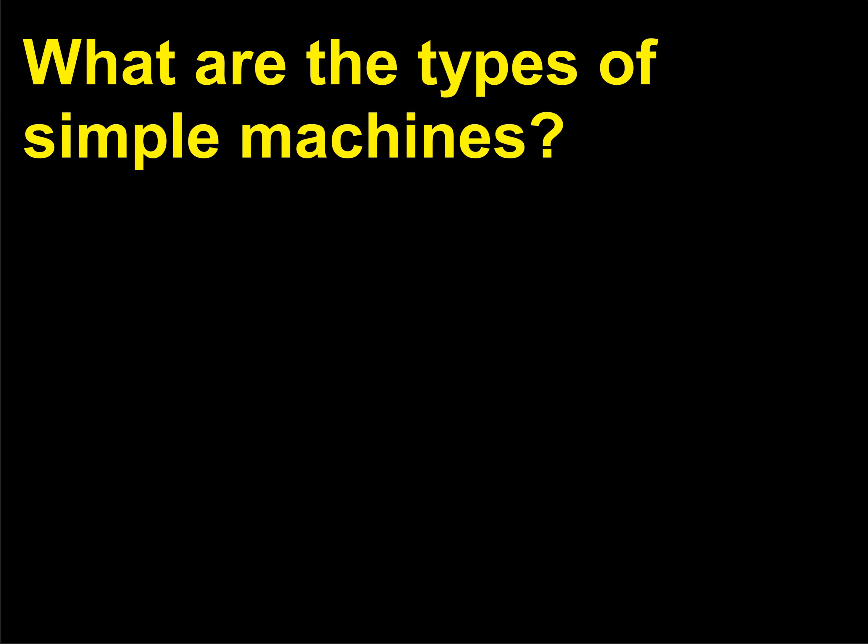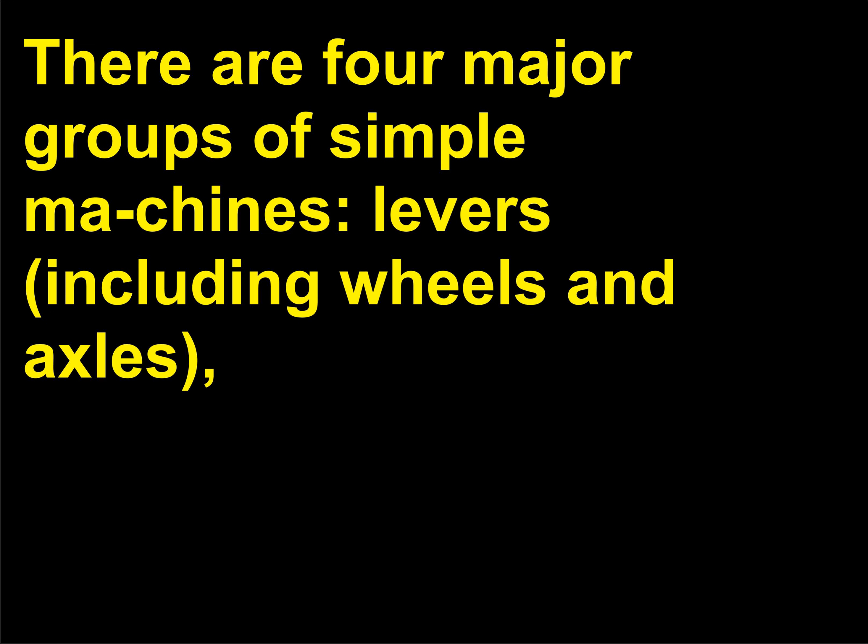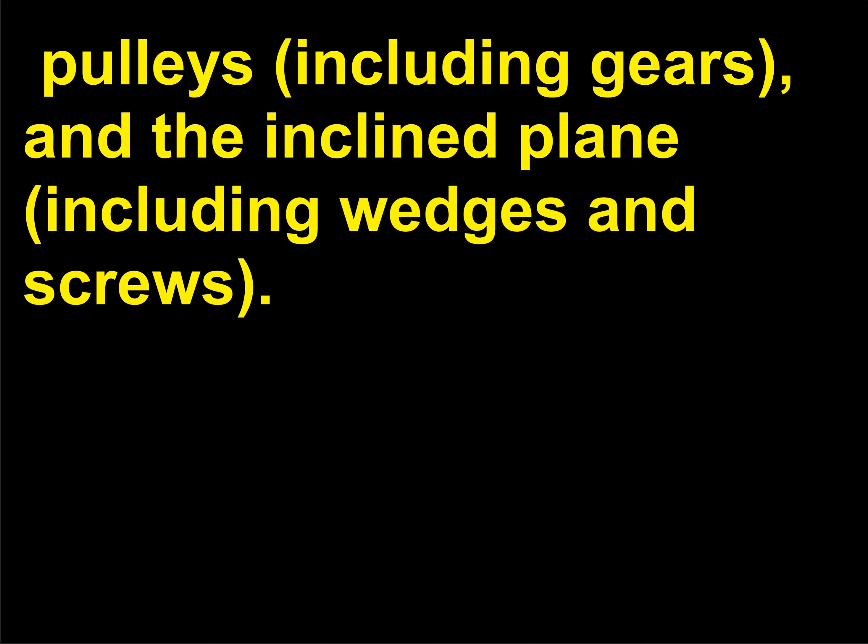What are the types of simple machines? They are: levers, including wheels and axles; pulleys, including gears; and the inclined plane, including wedges and screws.